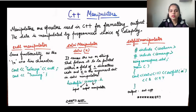For using the setw manipulator, we have to include the appropriate header file. The header file used for manipulators is iomanip — IO means input/output and manip is manipulator. Whenever you want to use the setw manipulator, you have to include the header file iomanip.h, which stands for input/output manipulator.